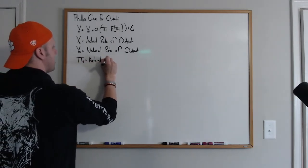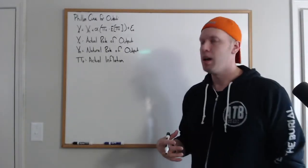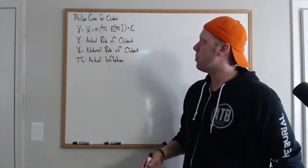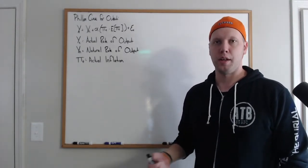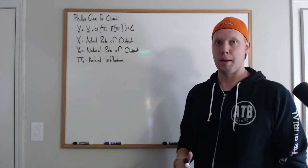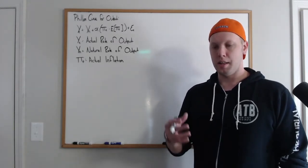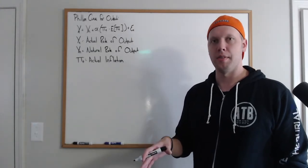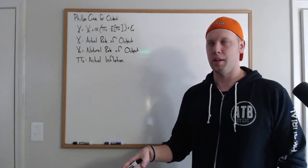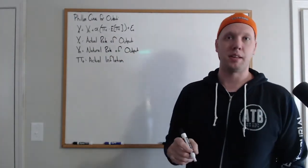Pi_t is actual inflation — the inflation rate observed each period. But it's not just the actual inflation rate that matters; it's how that deviates from what people expected inflation to be. If you expect zero inflation but inflation turns positive, your behavior changes. So it's not just actual inflation but also the expectation of inflation that drives output in this model.